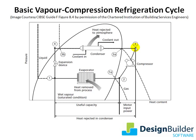The high temperature and pressure gas is then passed through a condenser between points three and four, where it rejects heat either to water or air in another heat exchanger. The cooling and enthalpy reduction results in the refrigerant returning to its liquid state at point four. The liquid is then passed through an expansion device, which reduces the pressure of the refrigerant and returns it to a low pressure liquid-gas mix, which can be used again to absorb heat from the evaporator.